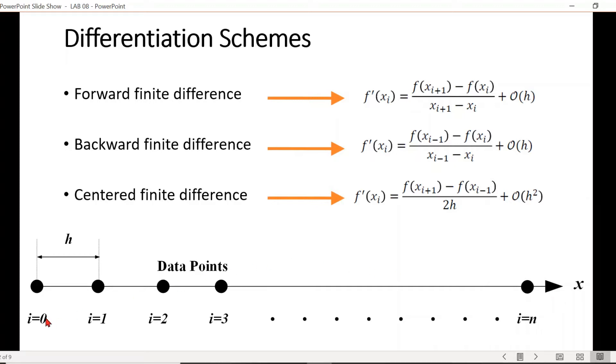So for forward difference scheme, if we want to determine the derivative at a centered point, let's say point i, we need to know the value of the function at i as well as one point forward, i plus one. Then we divide the difference of the function values by the difference of those points, or the step size, to evaluate the derivative.